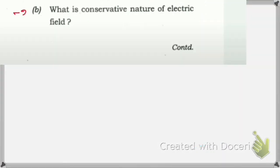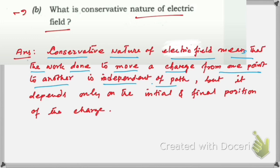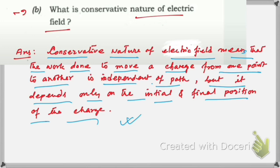Next question: what is the conservative nature of the electric field? The conservative nature of the electric field means that the work done to move a charge from one point to another is independent of path — it depends only on the initial and final positions of the charge.